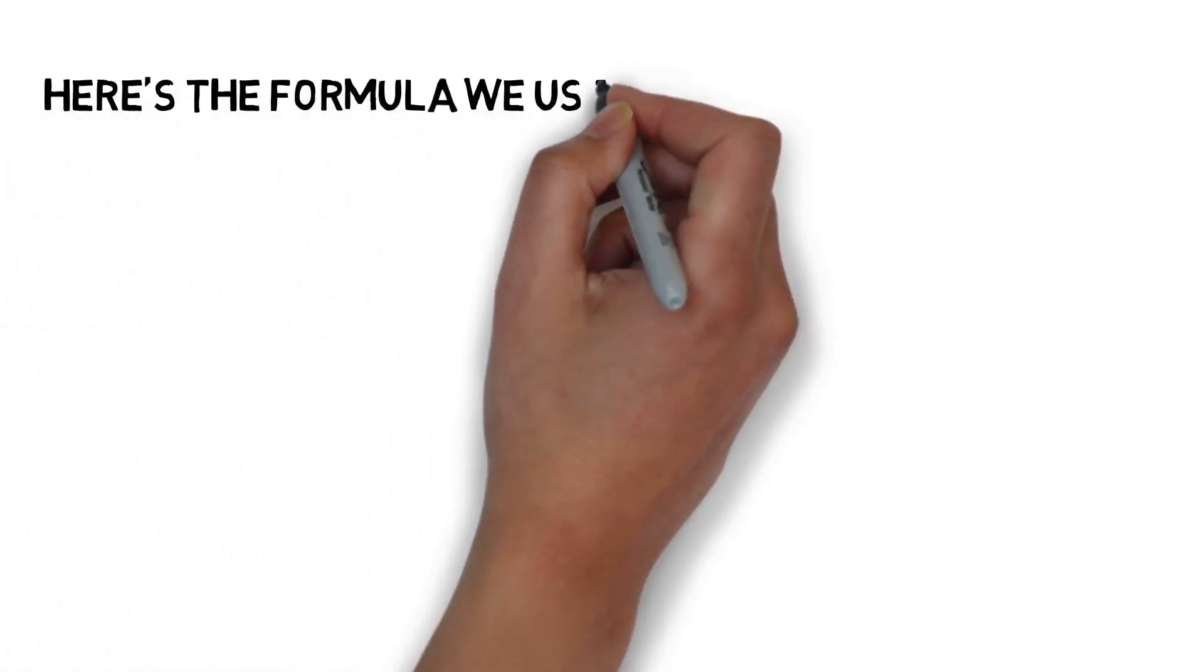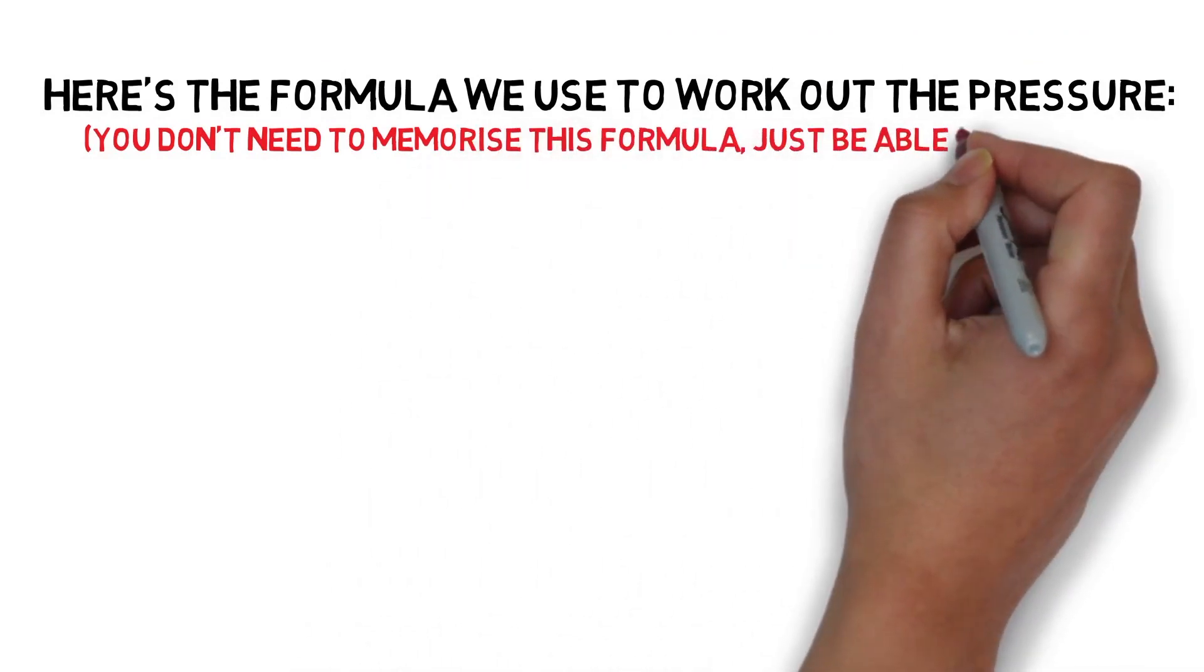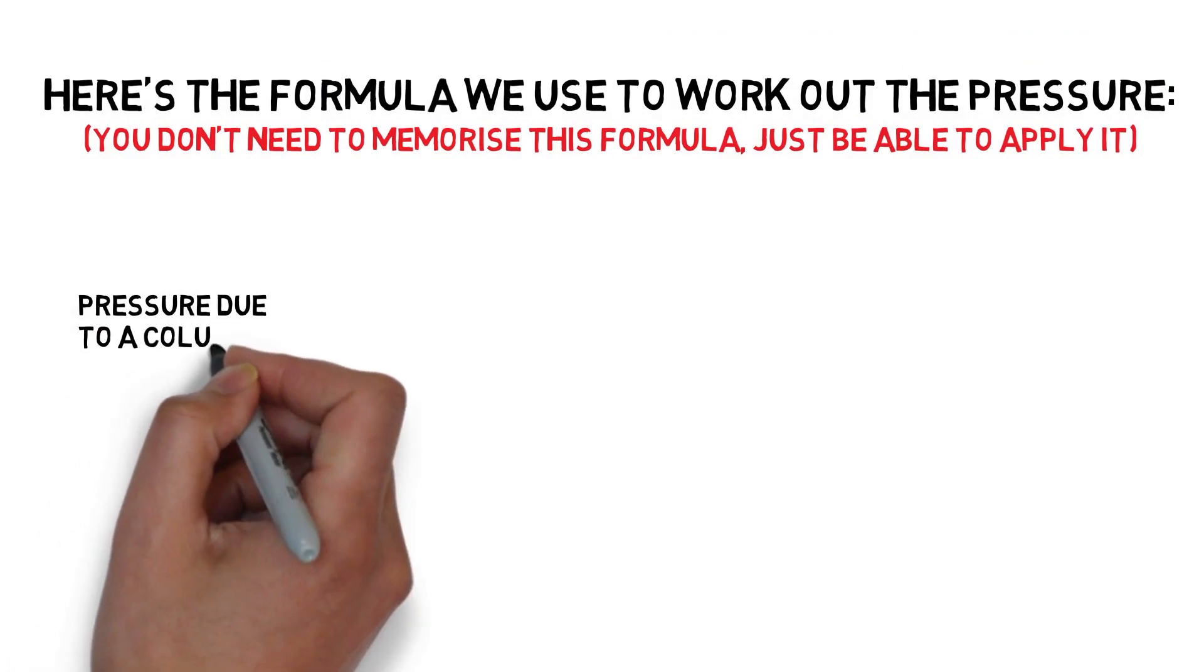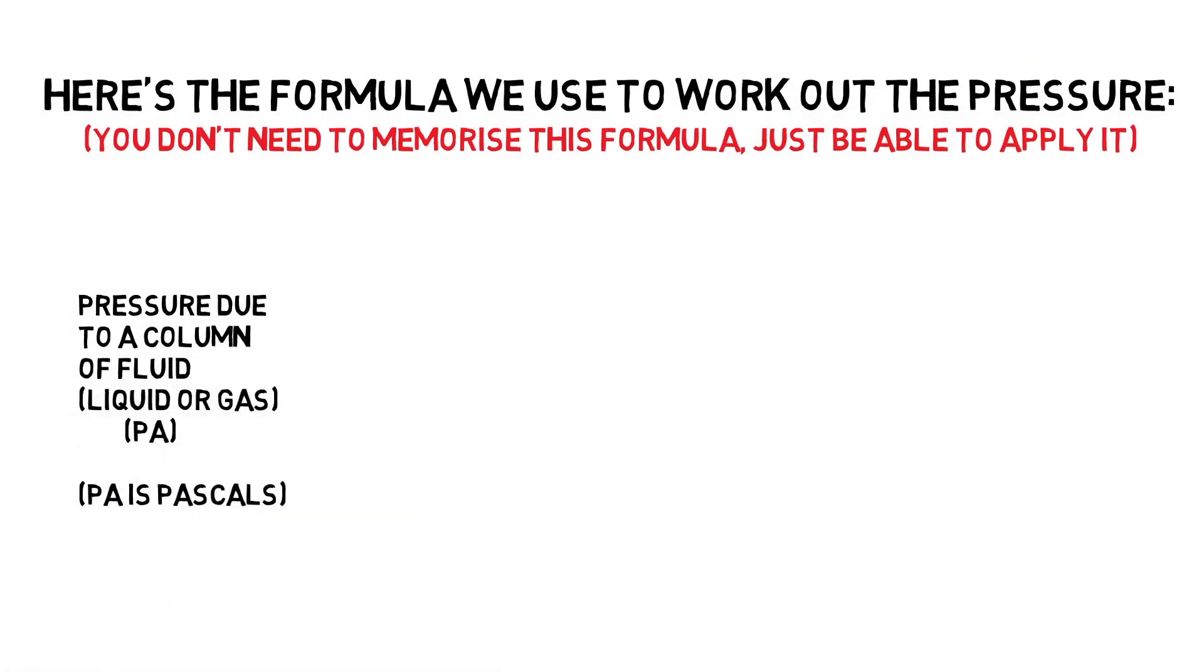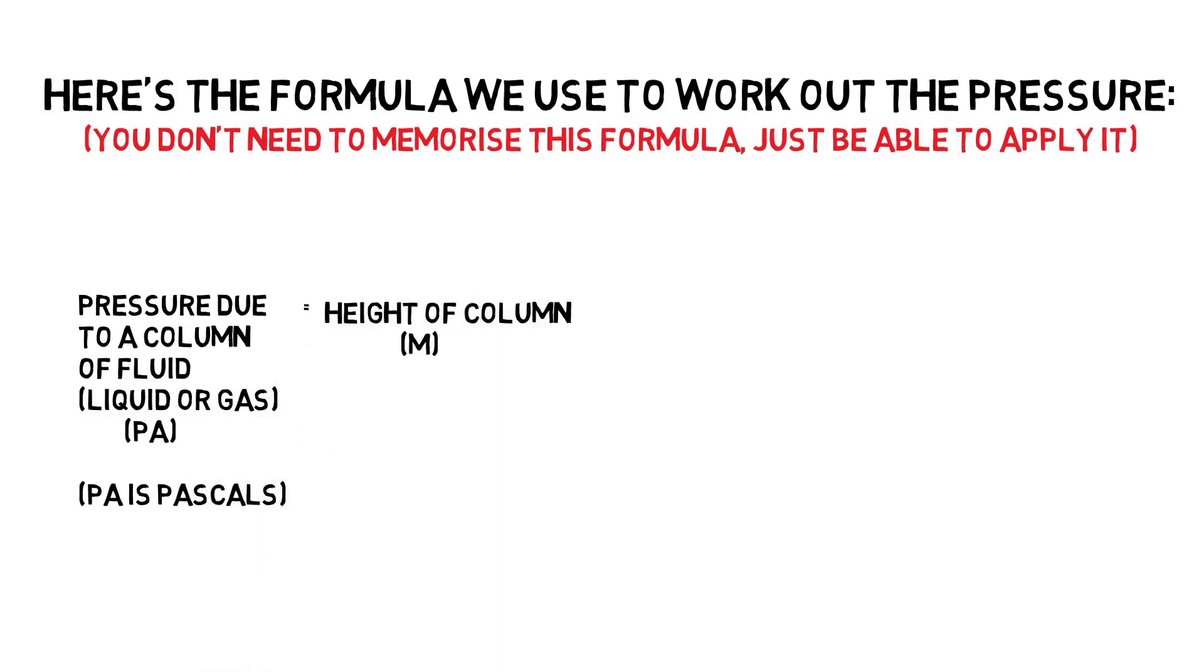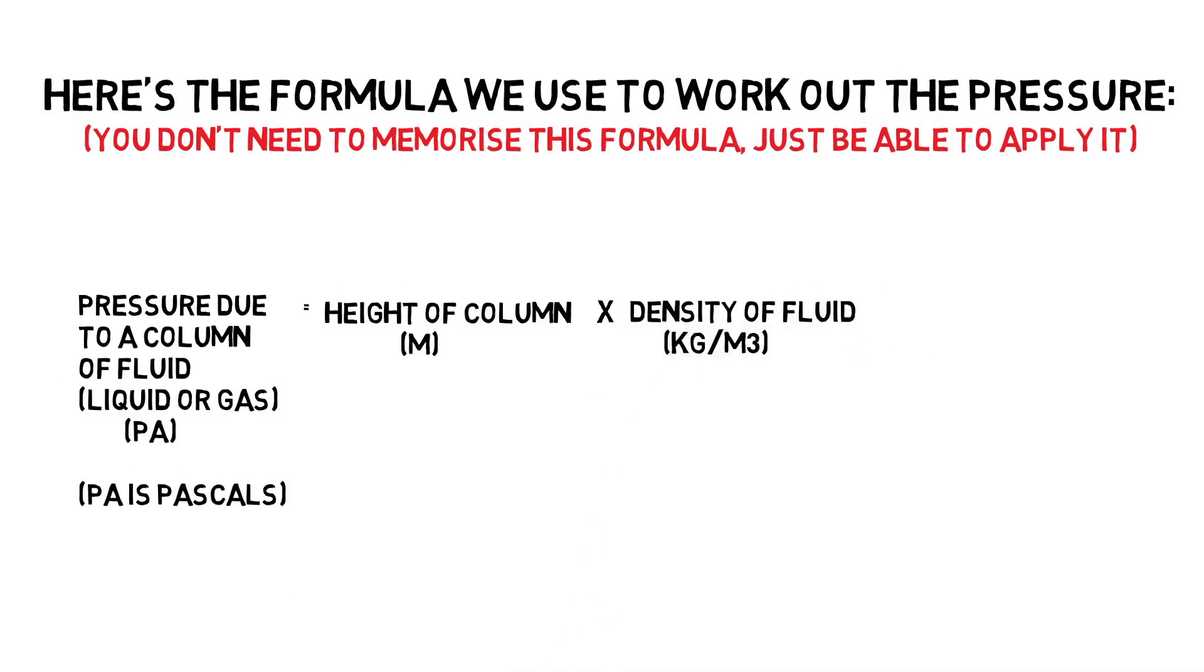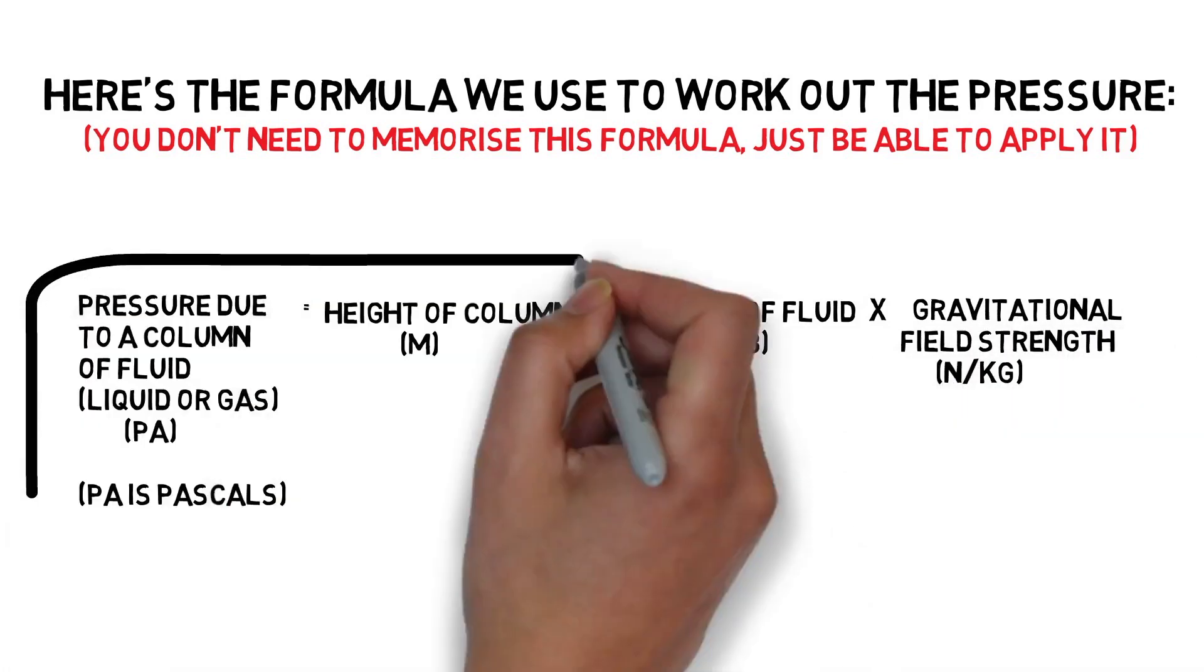Here's the formula we use to work out the pressure. You don't need to memorize this formula, just be able to apply it. Pressure due to a column of fluid (liquid or gas) in Pascals equals the height of the column of fluid in meters times by the density of the fluid in kilograms per meter cubed times by the gravitational field strength in newtons per kilogram.